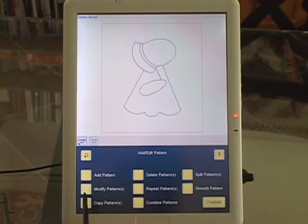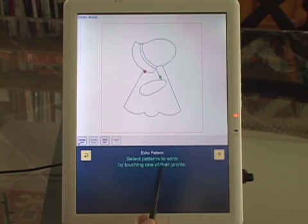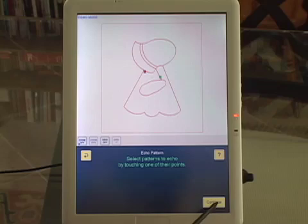Now, the first thing I'm going to do is add some echo. So Add Pattern, Echo Pattern, select the patterns to echo by touching one of their points. I've only got one, this one. Continue.